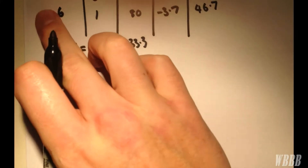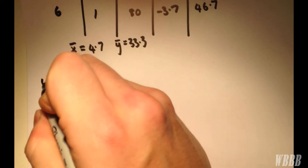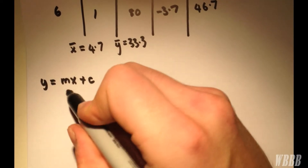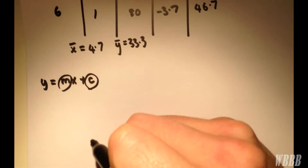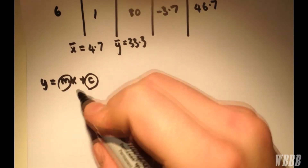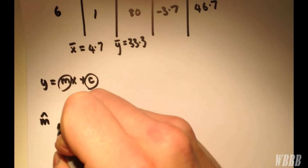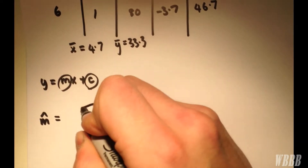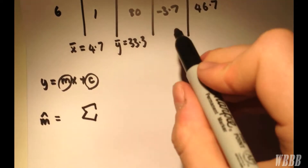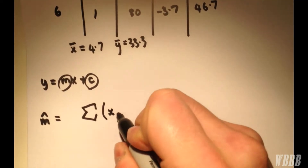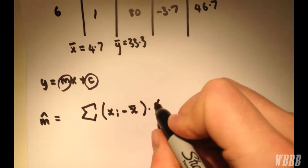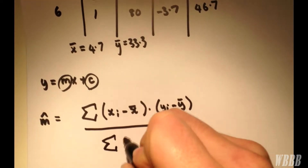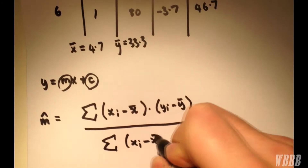Now we want to fit a linear regression model. Linear models are of the form y = mx + c, and all we want to find is m and c. The first thing we find is m, using the formula: m equals the sum of (x_i − x̄) multiplied by (y_i − ȳ), all over the sum of (x_i − x̄) squared.